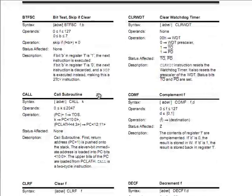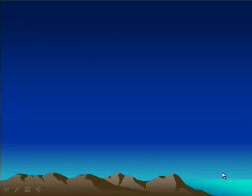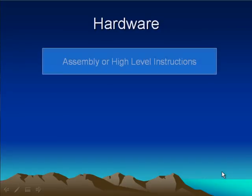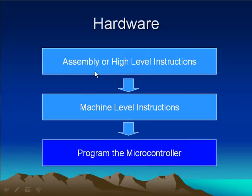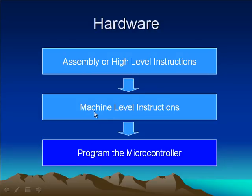Now we are moving to the hardware part — what hardware is required for microcontroller programming. I want to show you the basic steps we follow when programming microcontrollers. There are essentially three steps: first we write our code using assembly or a high-level language like C; then we compile it to get machine-level instructions that the microcontroller can understand; then we insert those machine-level instructions into the microcontroller using hardware.